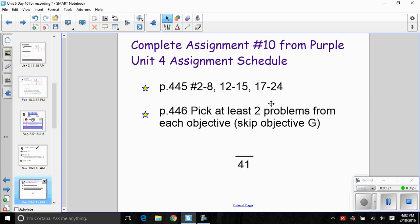What you're going to do is scan through all the problems, then pick at least 2 problems from each objective, except for objective G which we didn't address this unit. So all the other objectives, pick at least 2 problems from each. Of course I would do more, but 2 is a minimum. Don't pick the ones that are easiest or that you can get done most quickly. You want to choose the ones that you need practice with so that you can best prepare for the test. Altogether, this will be out of 41.